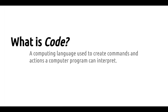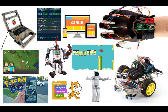Code is a computing language, and there's more than one, just like we have more than one spoken language across various countries. These languages are all used to create commands and actions that a computer program can interpret. There are so many different applications across websites, animations, video games, robotics, applications — anything you interact with that has to do with a computer had some type of code involved to make that happen.